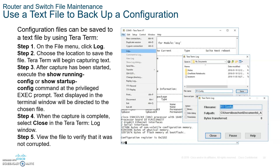To back up your config file using a text file, the best thing to do is copy and paste the running config or startup config into Notepad. Go to privilege mode, type show run, highlight and copy all of it, go to Notepad, and paste it into a text file and save it. When you need it back, open Notepad, highlight all the text, copy it, go back into your router, type config T, paste — and everything will be executed immediately. That's how quick you can save and restore your configuration file.